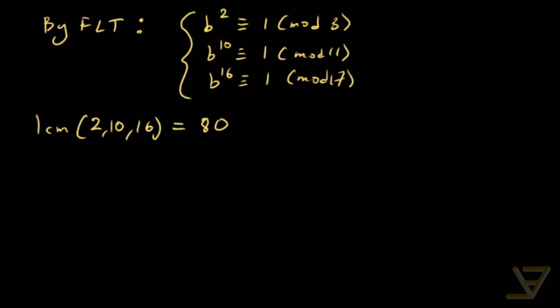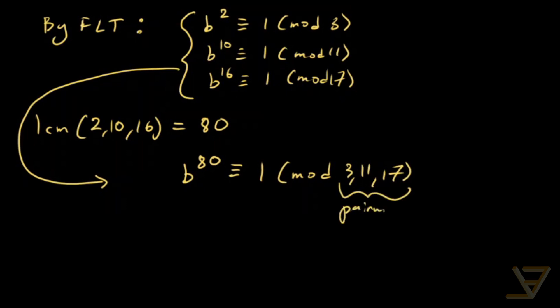So we can just raise these to higher powers and find that b^80 ≡ 1 (mod 3, 11, and 17). And since these are pairwise coprime, we find that b^80 ≡ 1 (mod 561).